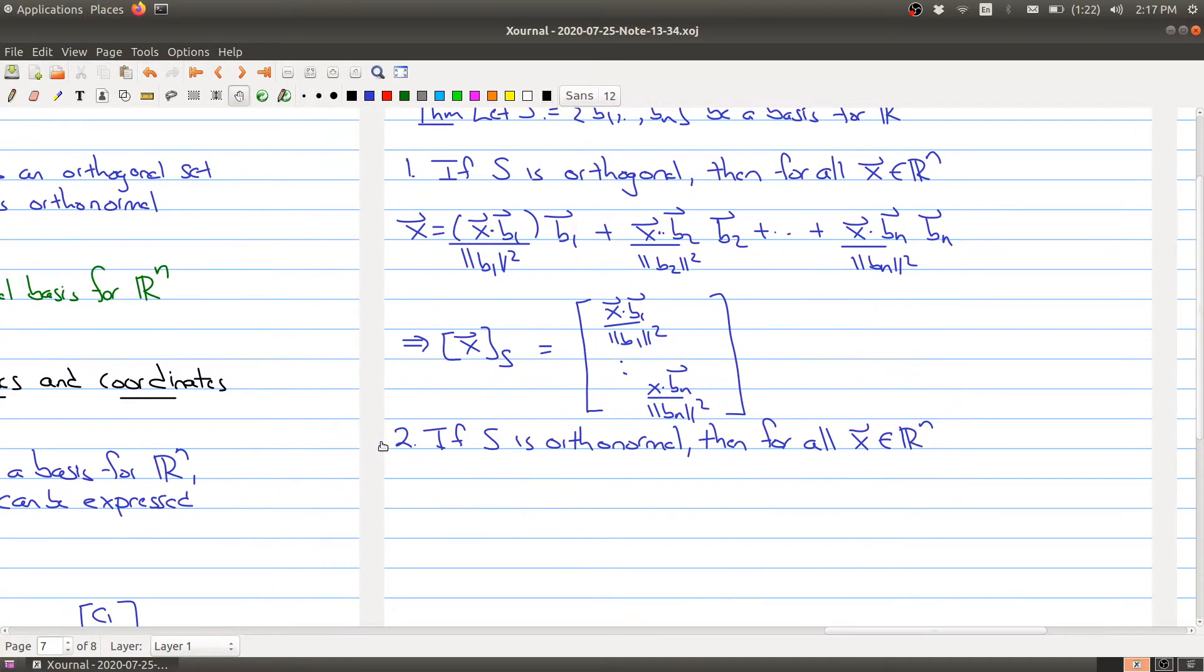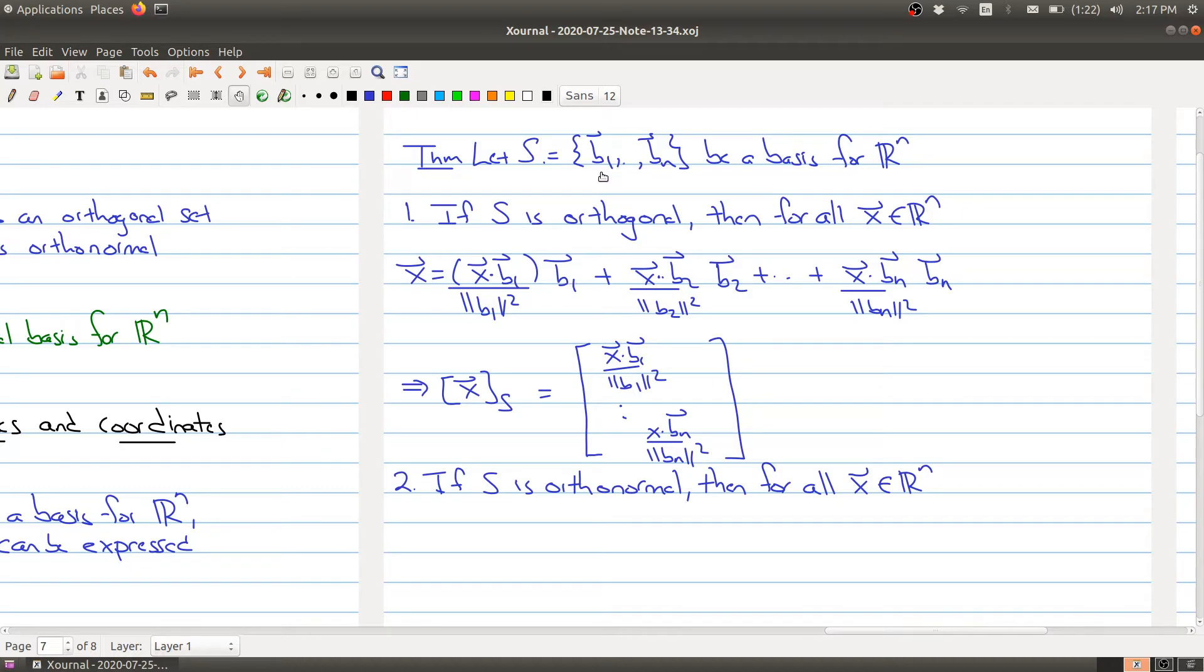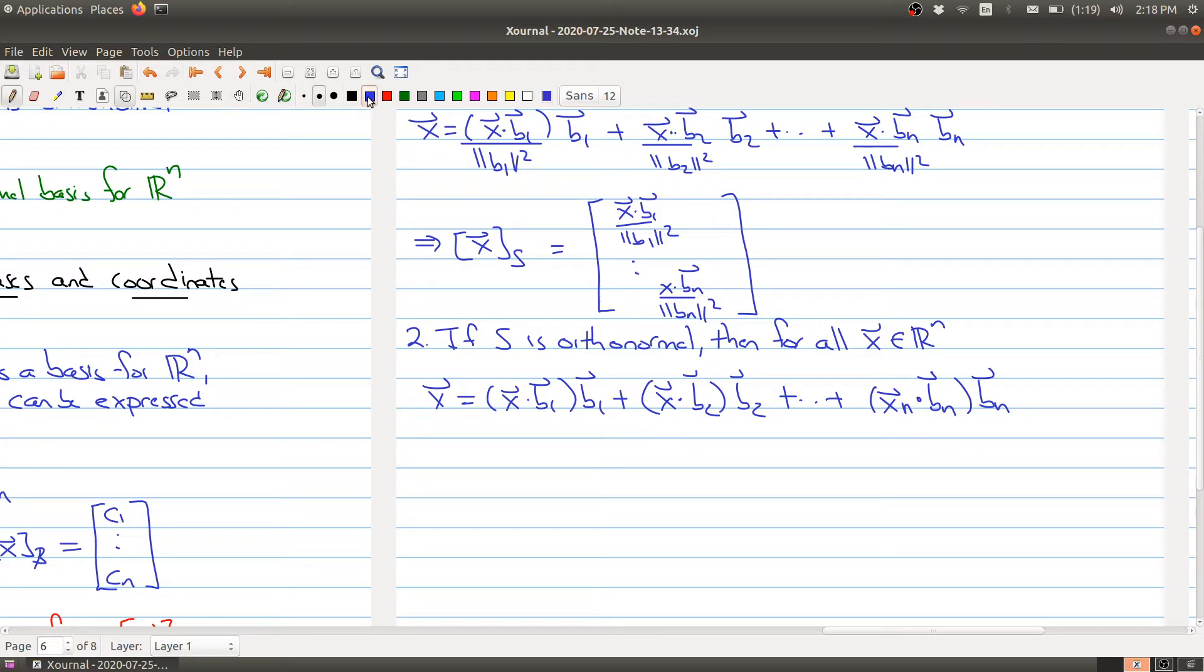Now, an orthonormal basis is also orthogonal, so basically the same formula applies, but we even get extra information. Because each of these vectors are coming from an orthonormal set, they all have length one. So all of these denominators are actually one. Then for all x in R^n, we can write x as x dotted with b₁ times the vector b₁ plus x dotted with the vector b₂ times the vector b₂ and so on, all the way down to the vector x dotted with the vector bₙ times the vector bₙ. And then it's relatively easy to write the s-coordinate of x because I'm using s for my basis.